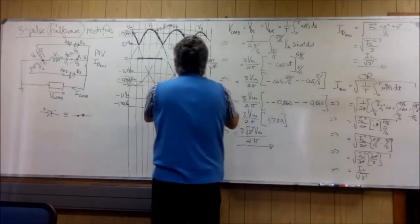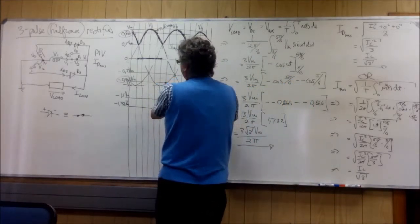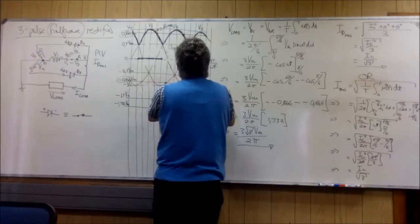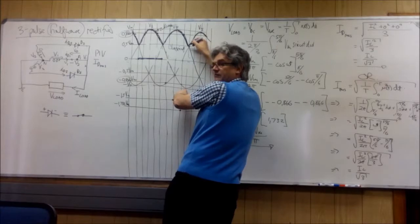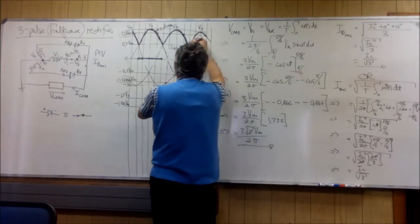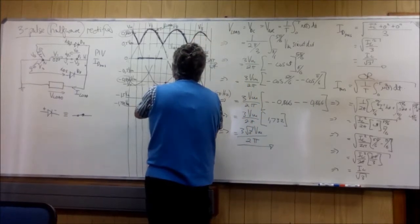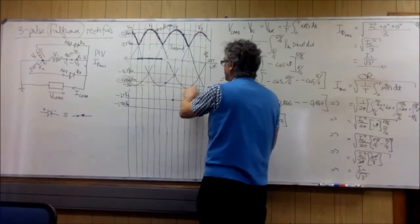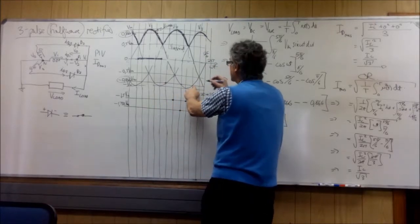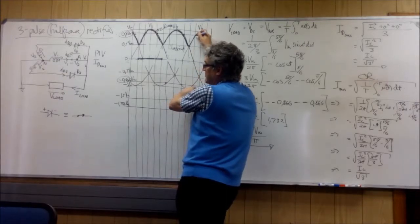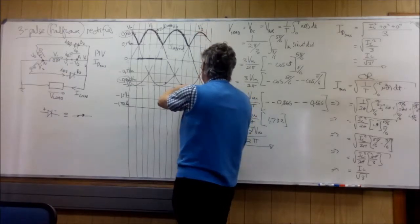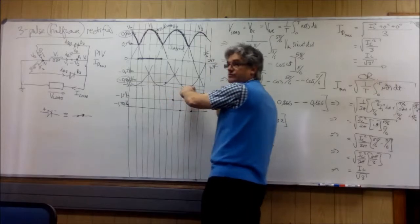I go to this point here. V1 is minus 1, V2 is 0.5, so it's minus 1 minus 0.5 gives me minus 1.5. V1 is minus 0.866, V2 is 0.866. Minus 0.866 minus 0.866 gives me minus 1.732.